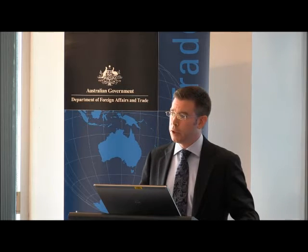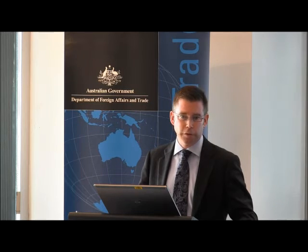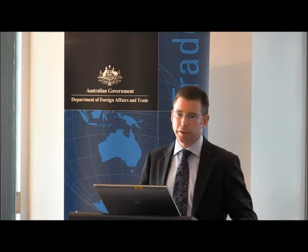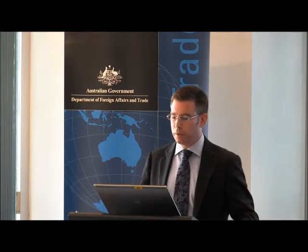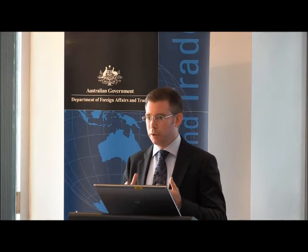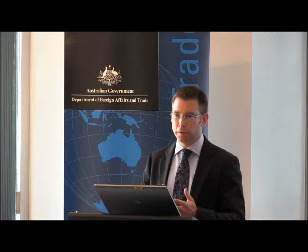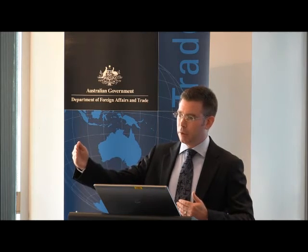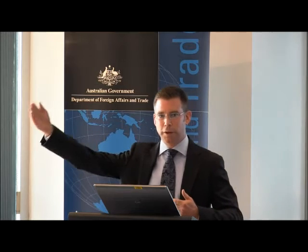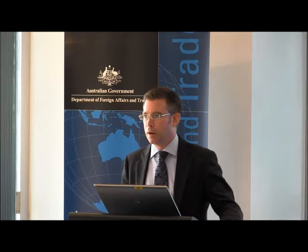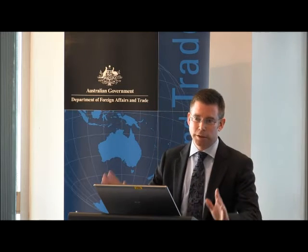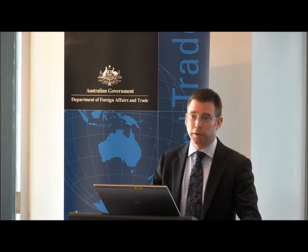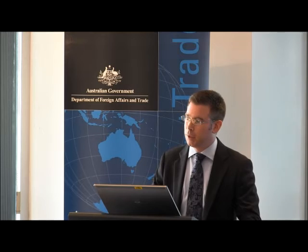The second type is Australian Autonomous Sanctions regimes. These are both imposed and implemented purely by the Australian Government as a matter of our foreign policy. The autonomous sanctions we implement may supplement UNSC sanctions — there are instances where the UNSC has gone a certain distance and the Australian Government has chosen to go further through our autonomous sanctions. Alternatively, autonomous sanctions might be entirely separate from UNSC sanctions, in cases where the UNSC has had nothing to say about a particular country.